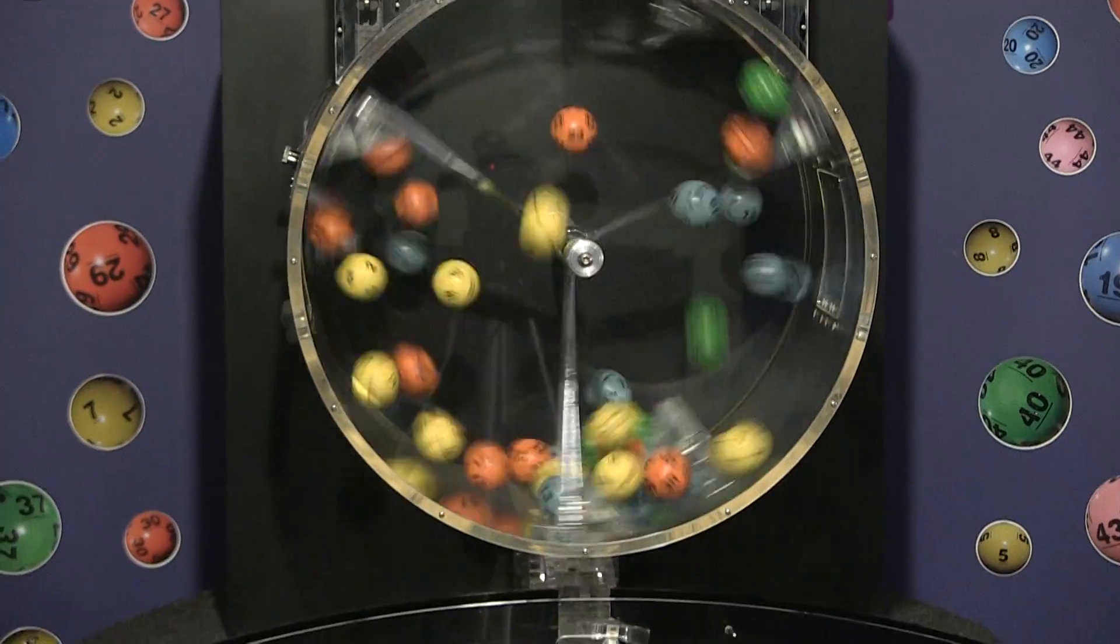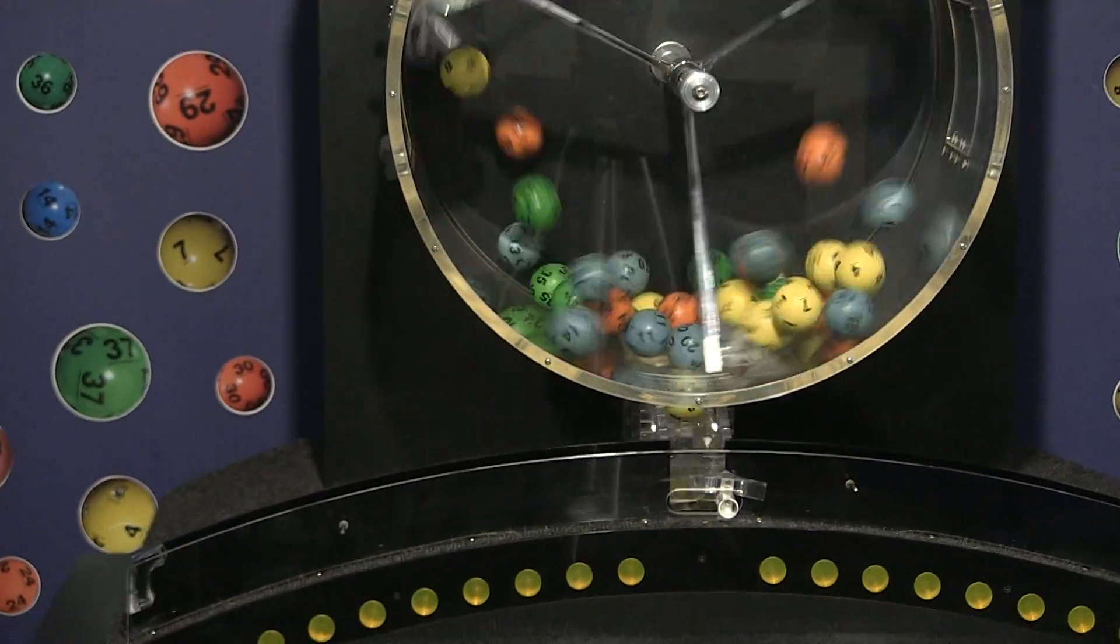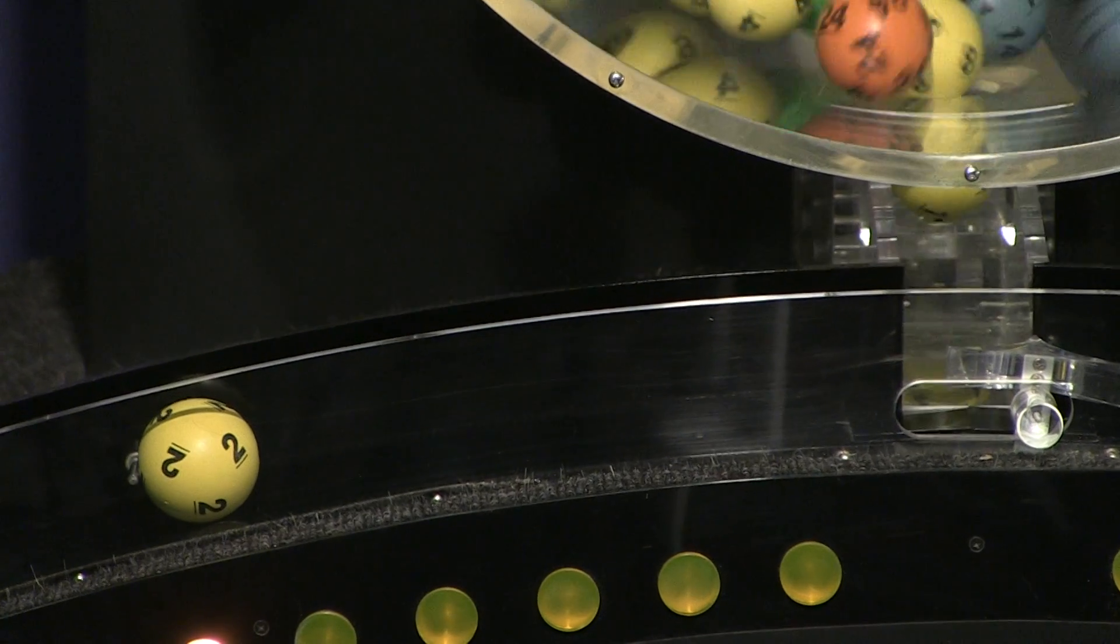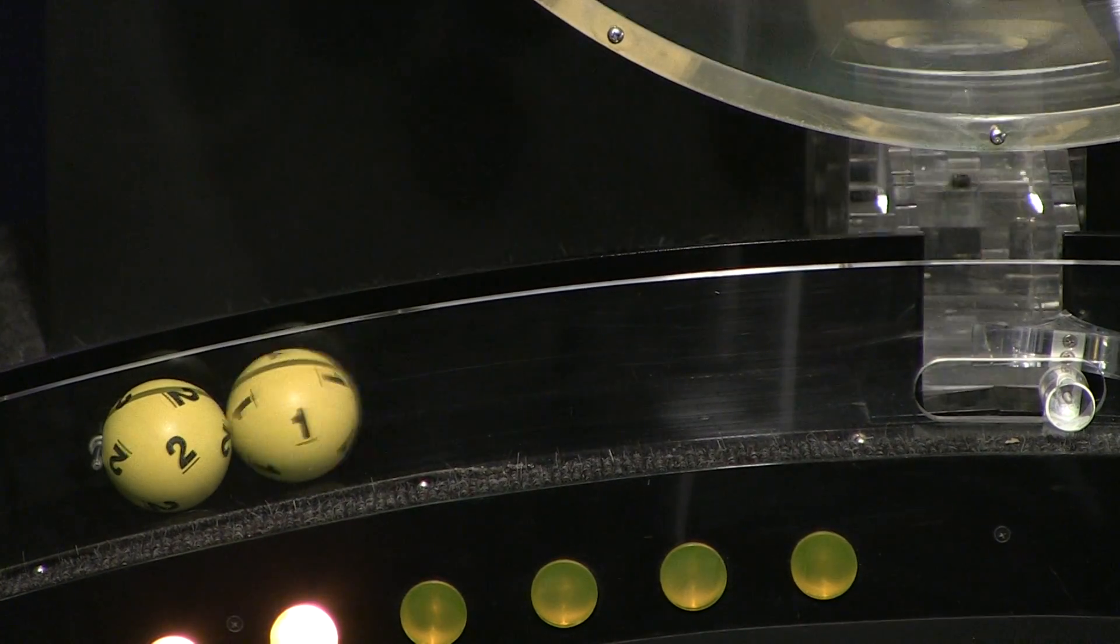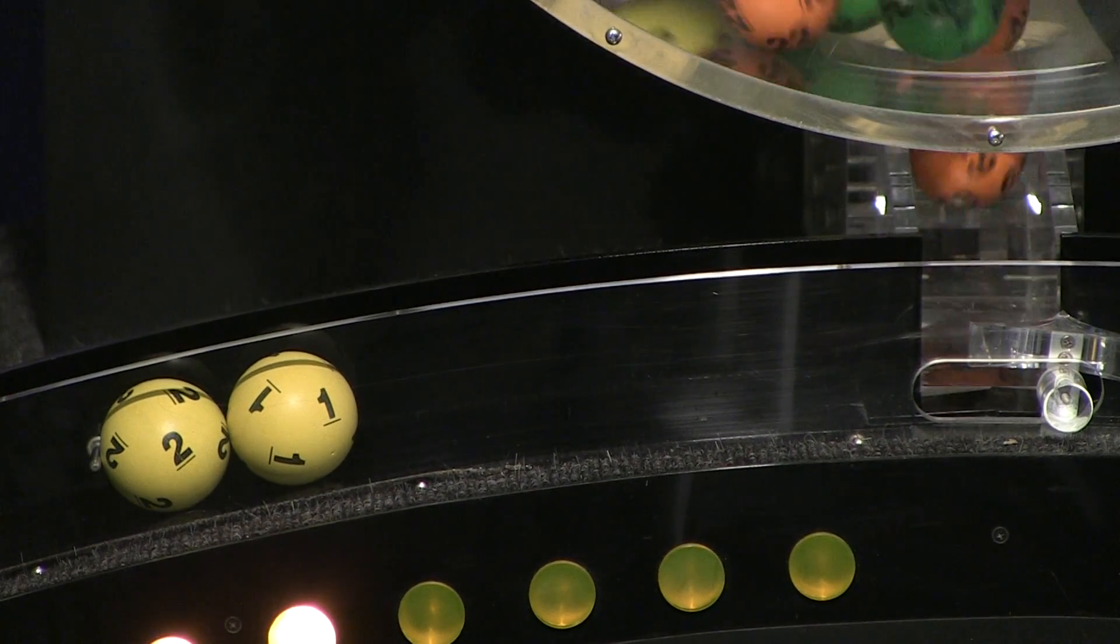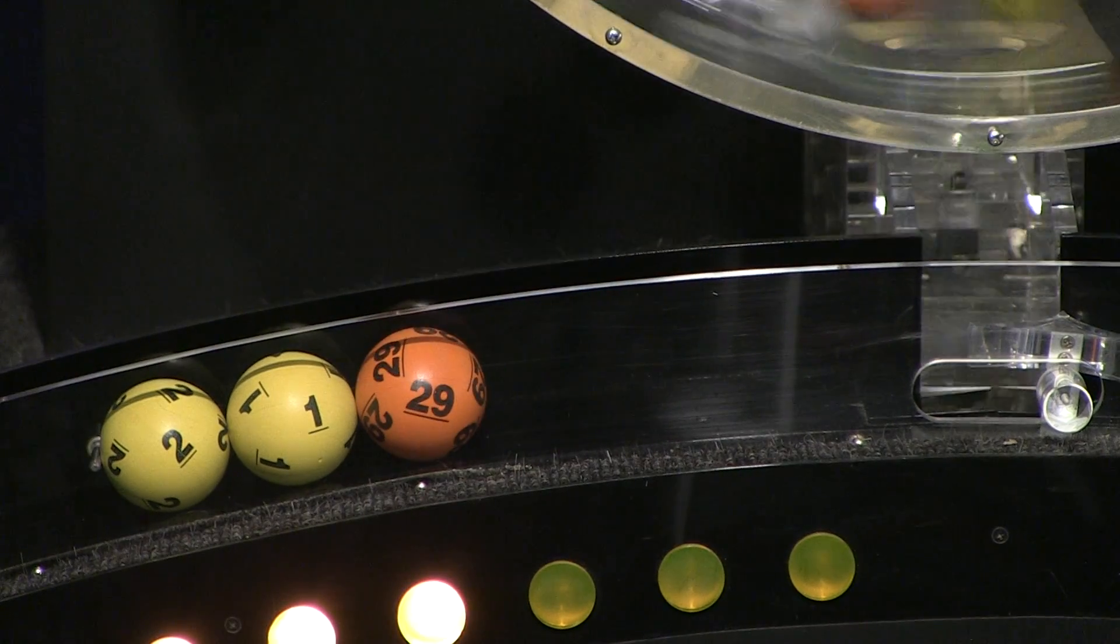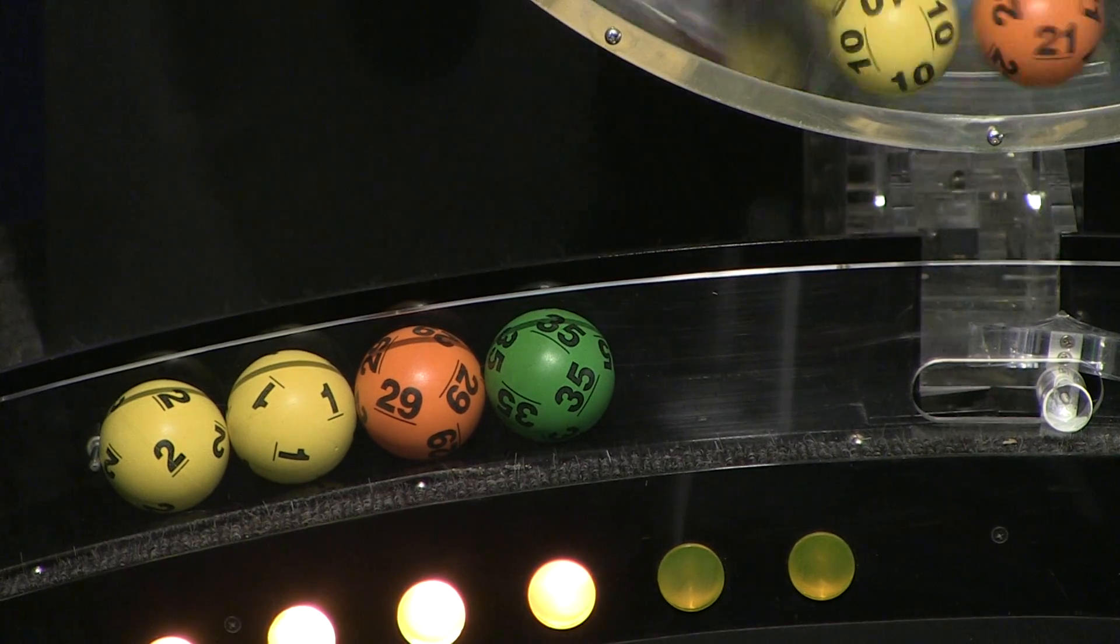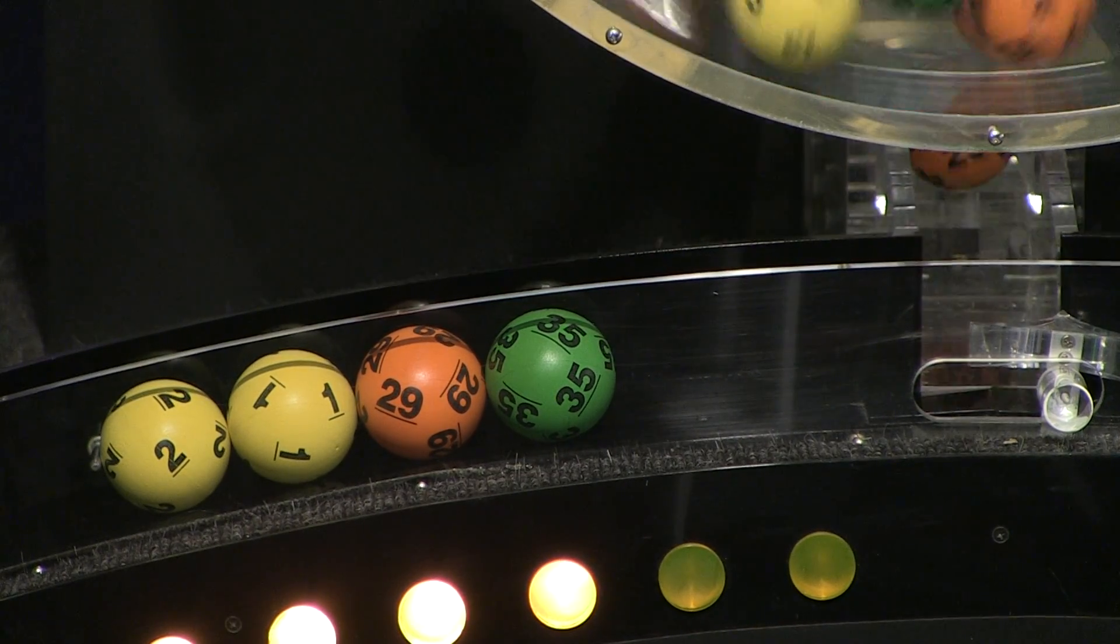Now let's see how you did in tonight's Mass Cash drawing. Our first number up is number 2, and following that we have number 1. Only right behind that is number 29. Up next is 35, and the final ball in this sequence is number 25.